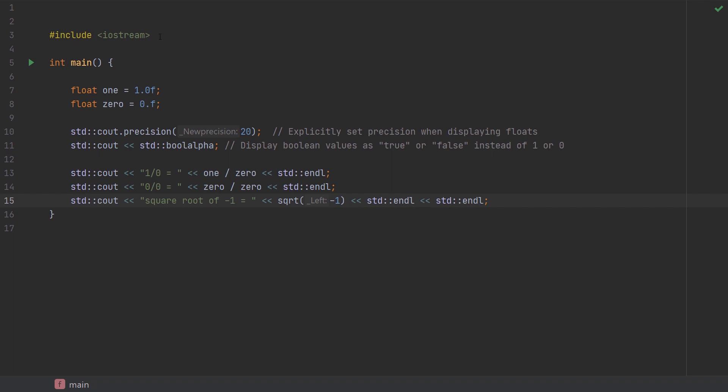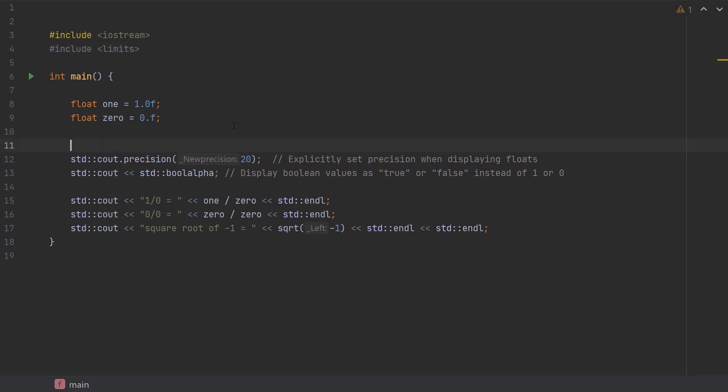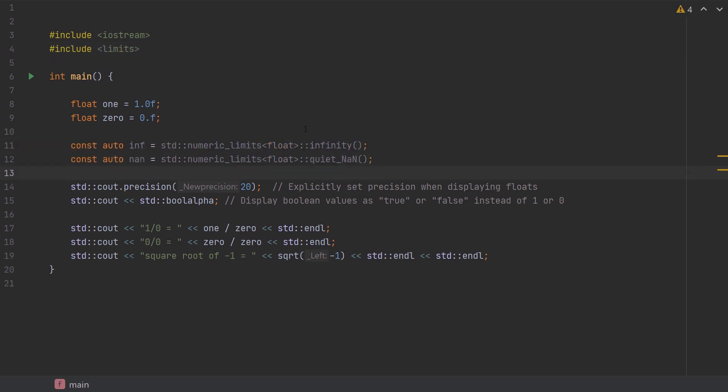But there are utility methods to give you these values, and they're in the limits header, and they're all static functions under the numeric_limits class. I can initialize inf and NaN using these functions.